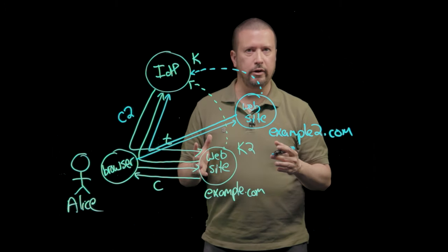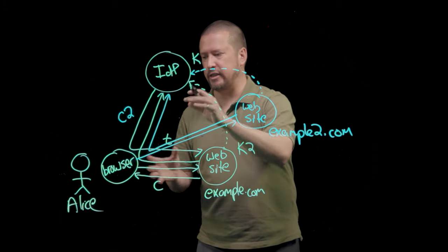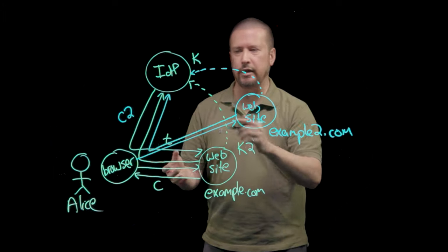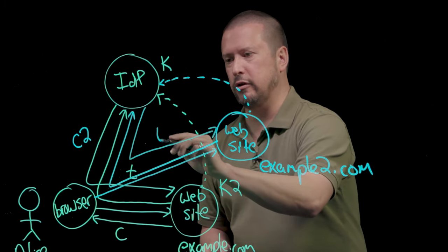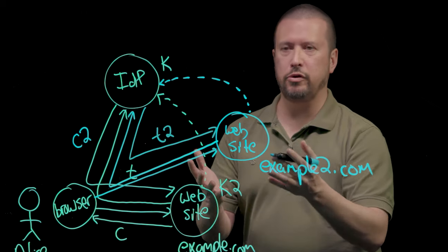If the identity provider decides that it's okay, it can simply use the cookie to know this is Alice and then send a token back through her browser, token T2, to the website.